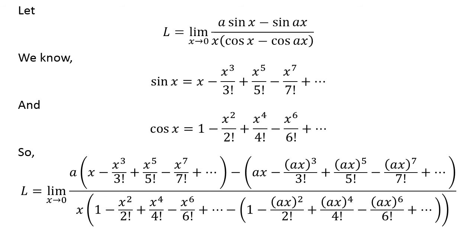We can find the series expansion of sine of a times x by replacing a times x in the place of x in every term of the sine of x expansion series. Similarly, we can find the series expansion of cosine of a times x. Then I have replaced sine of x, sine of a times x, cosine of x, and cosine of a times x by their expanded form in the limit L.